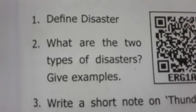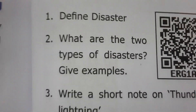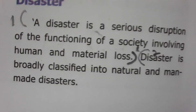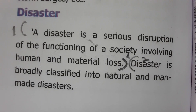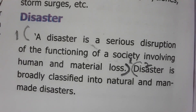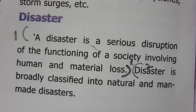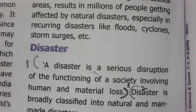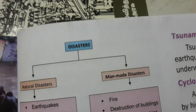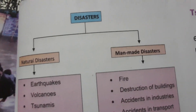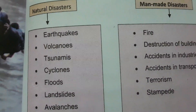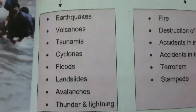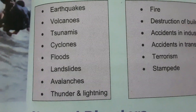Question 2: What are the two types of disasters? Give examples. Disaster is broadly classified into natural and man-made disasters. Natural disasters occur without any human intervention. Under natural disasters: earthquakes, volcanoes, tsunamis, cyclones, floods, landslides, avalanches, and thunder and lightning.